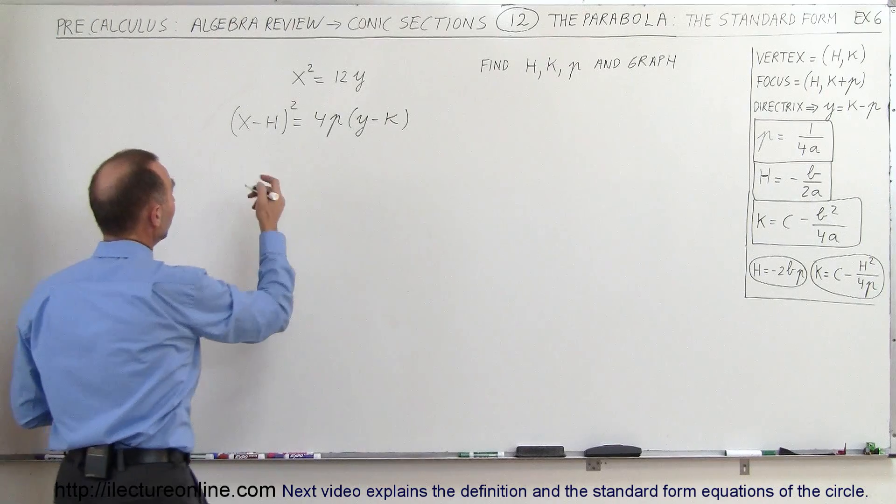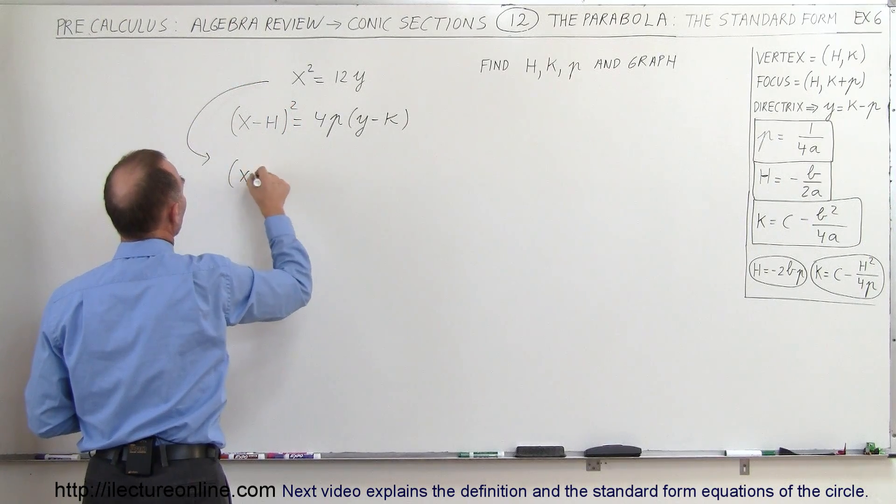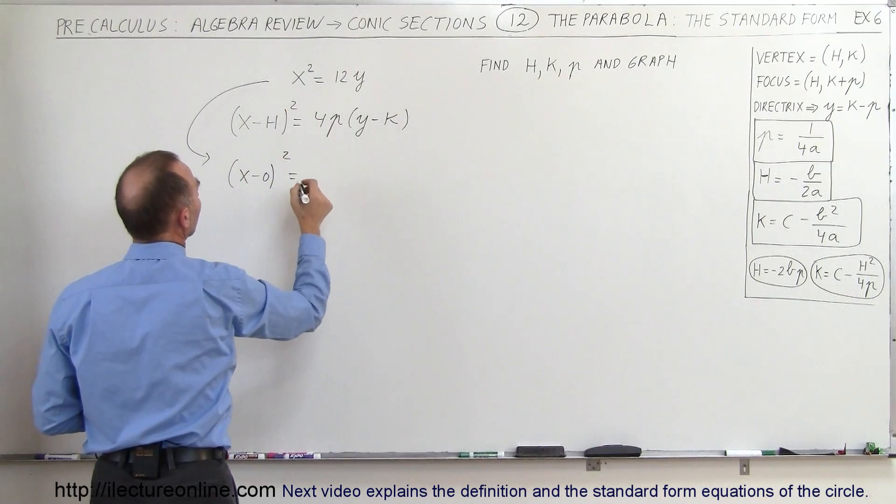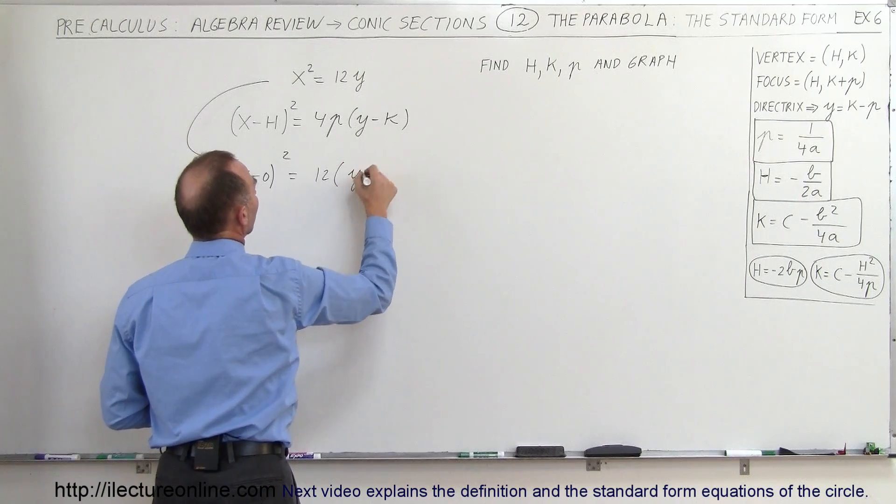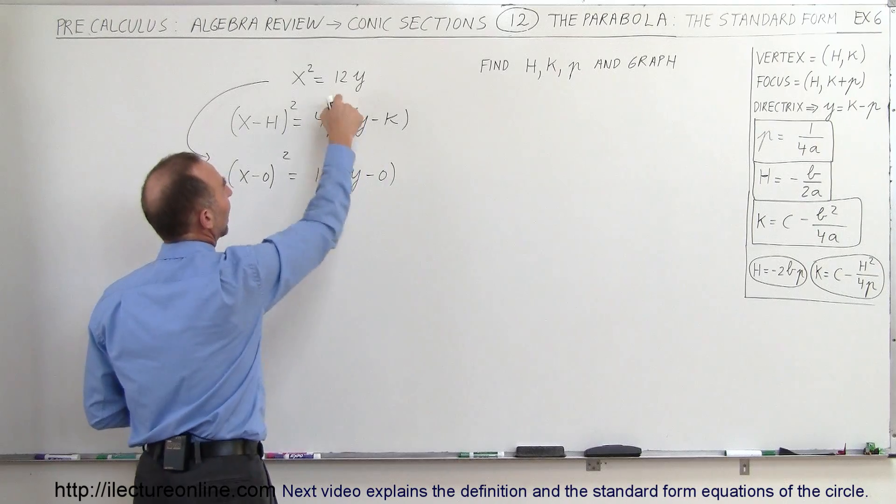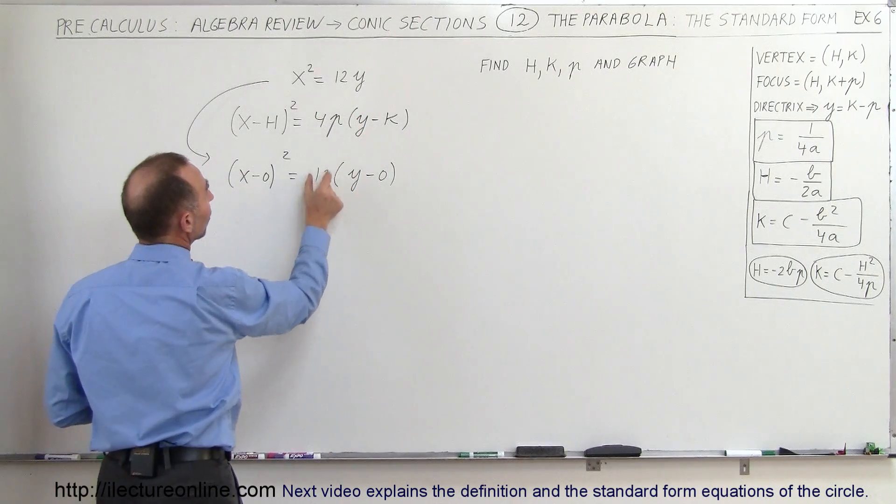How do we do that? Well, first of all, we can write this as (x - 0)² because that's still the same as x² equals 12 times (y - 0). If I multiply this times (y - 0) I get back 12y. Now the only thing left that I have to do is make this look like that.